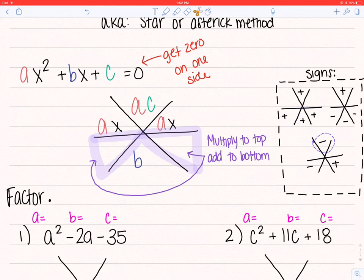Same thing, if you have a negative number on top, you're going to have opposite signs. One positive, one negative. The bigger number has to match the sign of the bottom. So the bigger factor has to be the same sign as the bottom, that way when you add or subtract them, it will get you the appropriate sign.